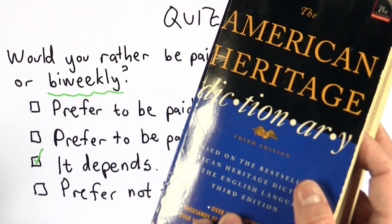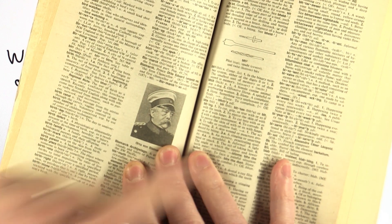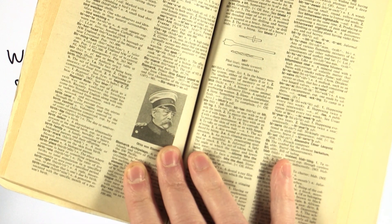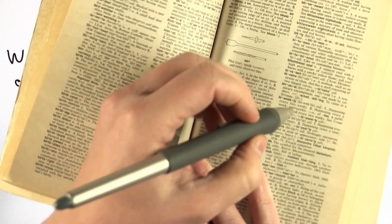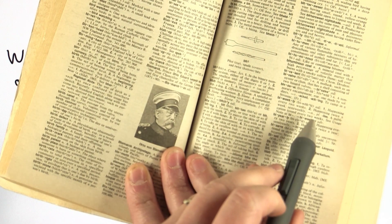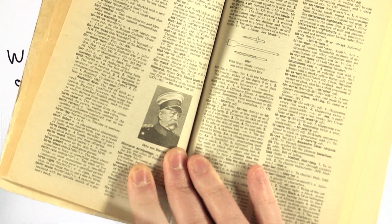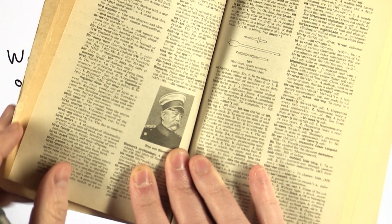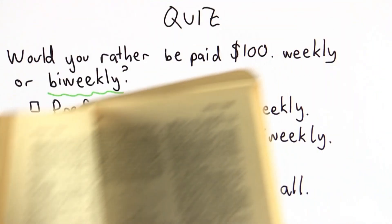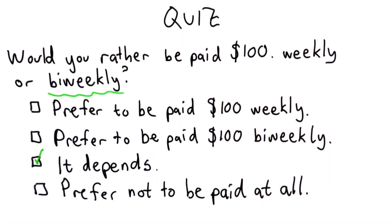If we look up biweekly in the dictionary, we see the definition of biweekly. It says happening every two weeks is the first definition; the second definition is happening twice a week. If you have the first definition, you'd rather be paid weekly, assuming you like more money. If you have the second definition, you'd rather be paid biweekly.